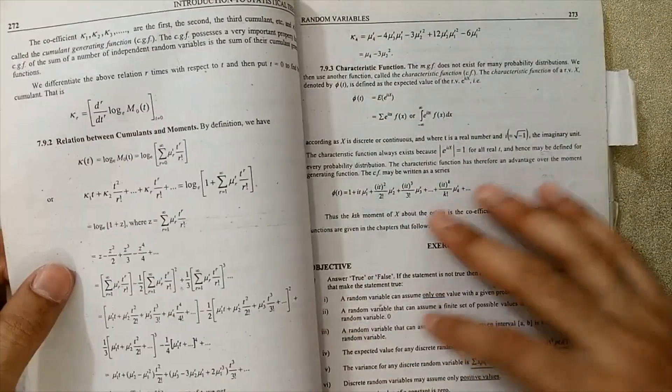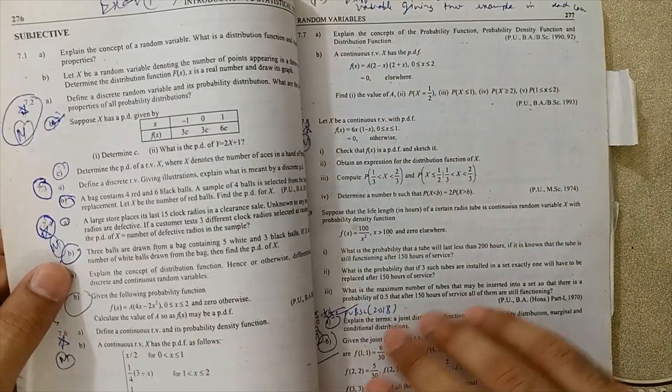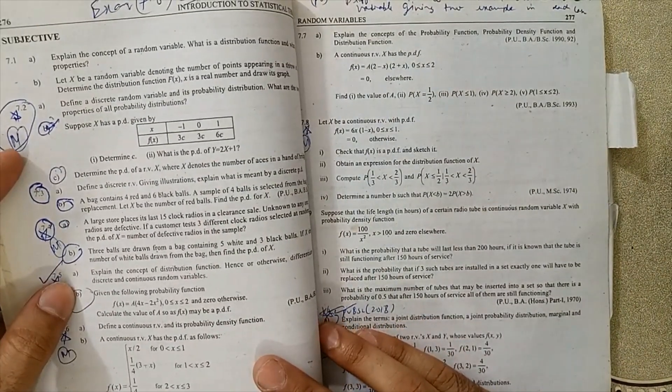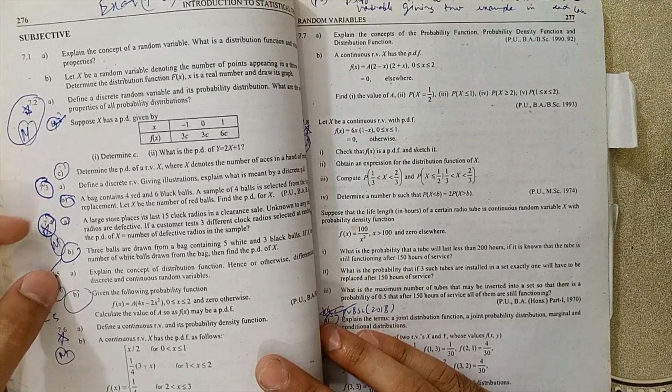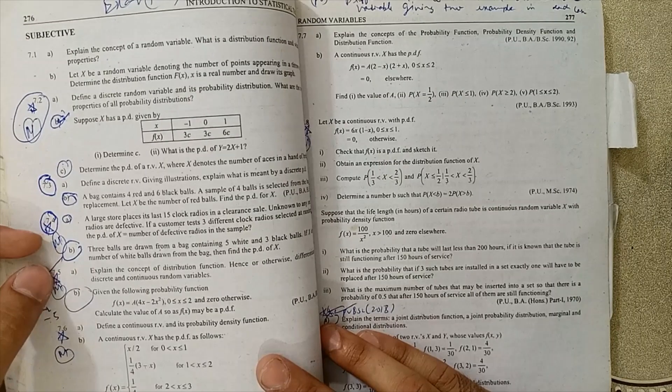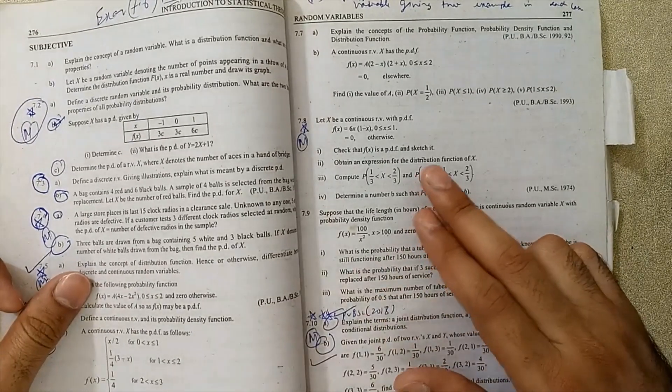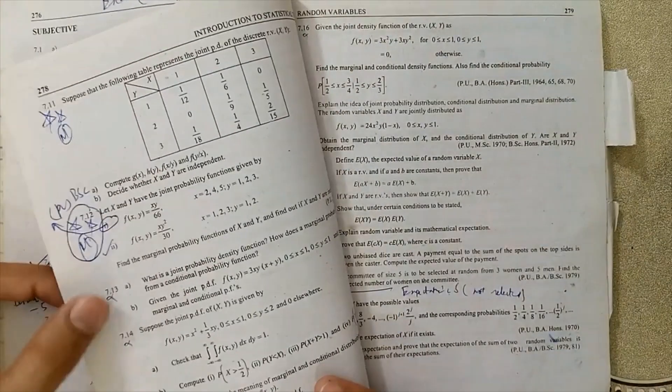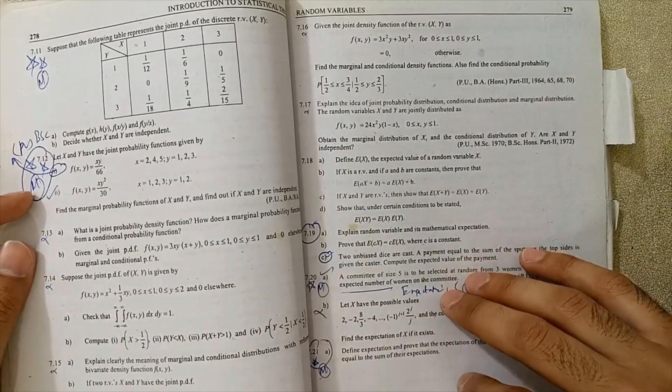Now moving to the exercises of Chapter 7 random variables: 7.2 parts A and B are important, 7.3 parts ABC, 7.4, 7.5, 7.6 is very important, 7.8, 7.10 parts A and B. Example 7.11, 7.12 first and second parts are very important for you.